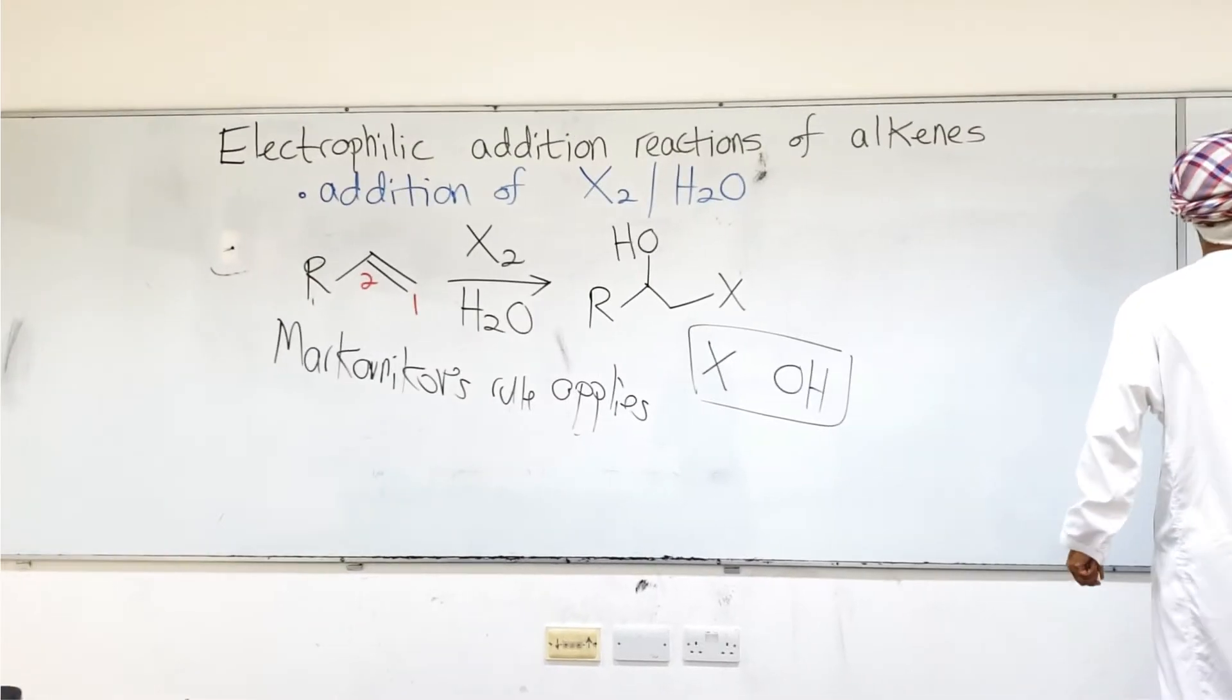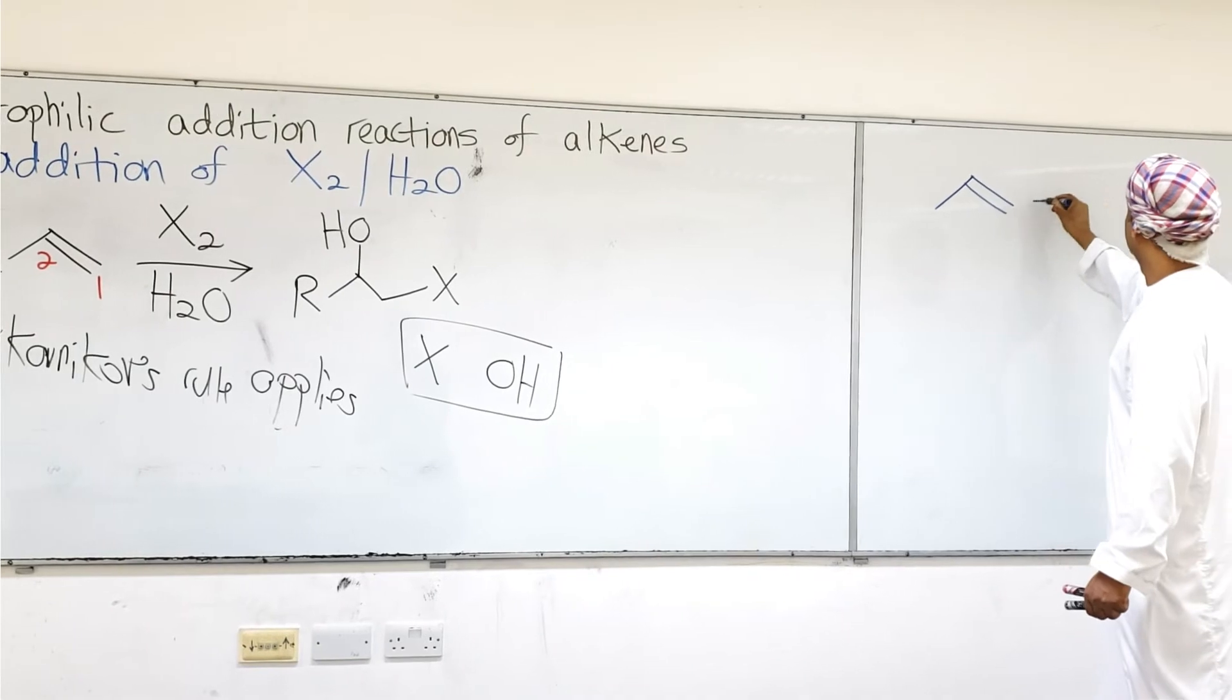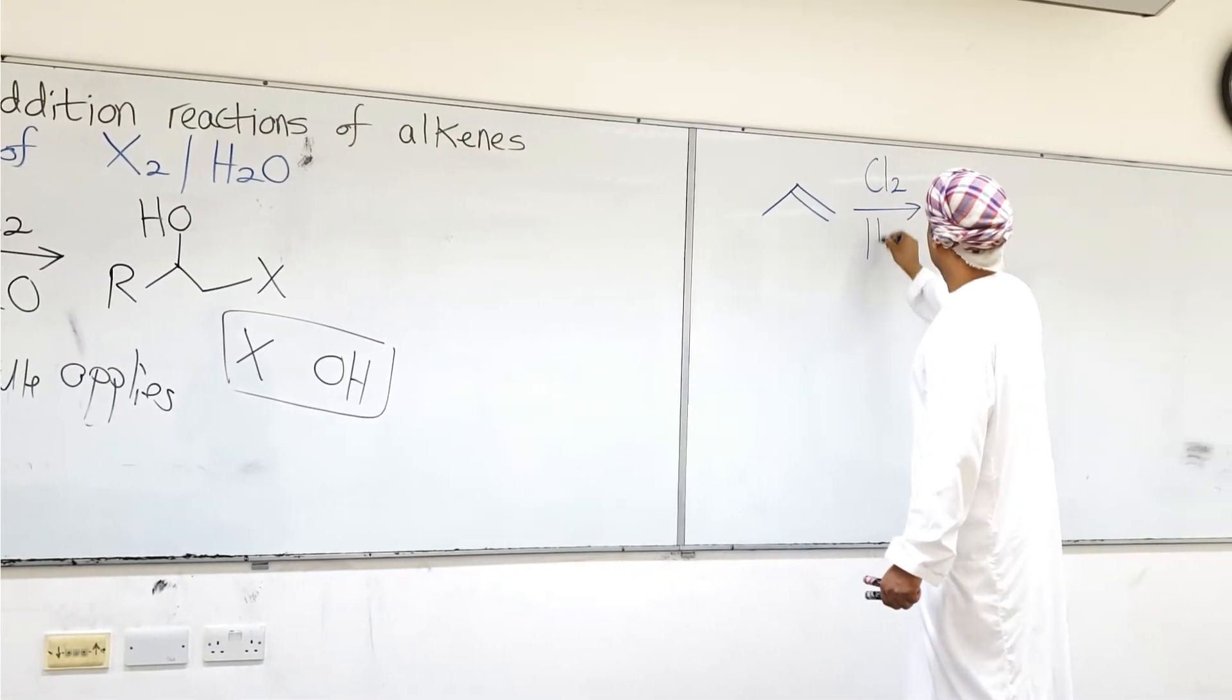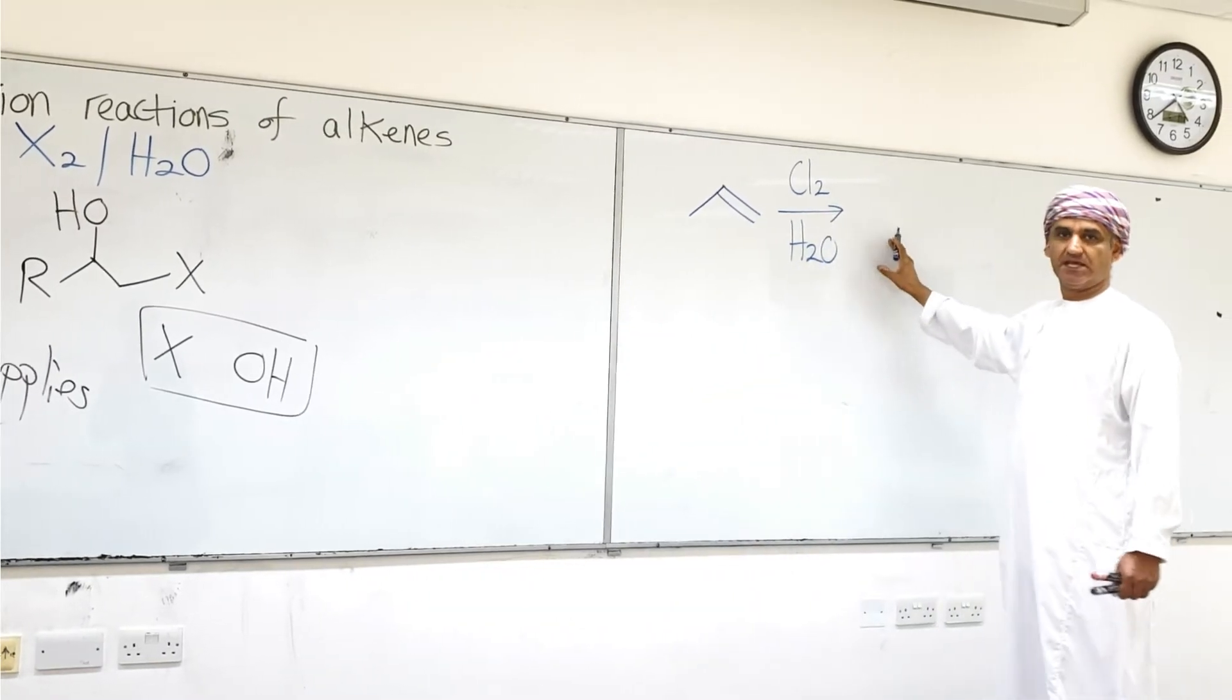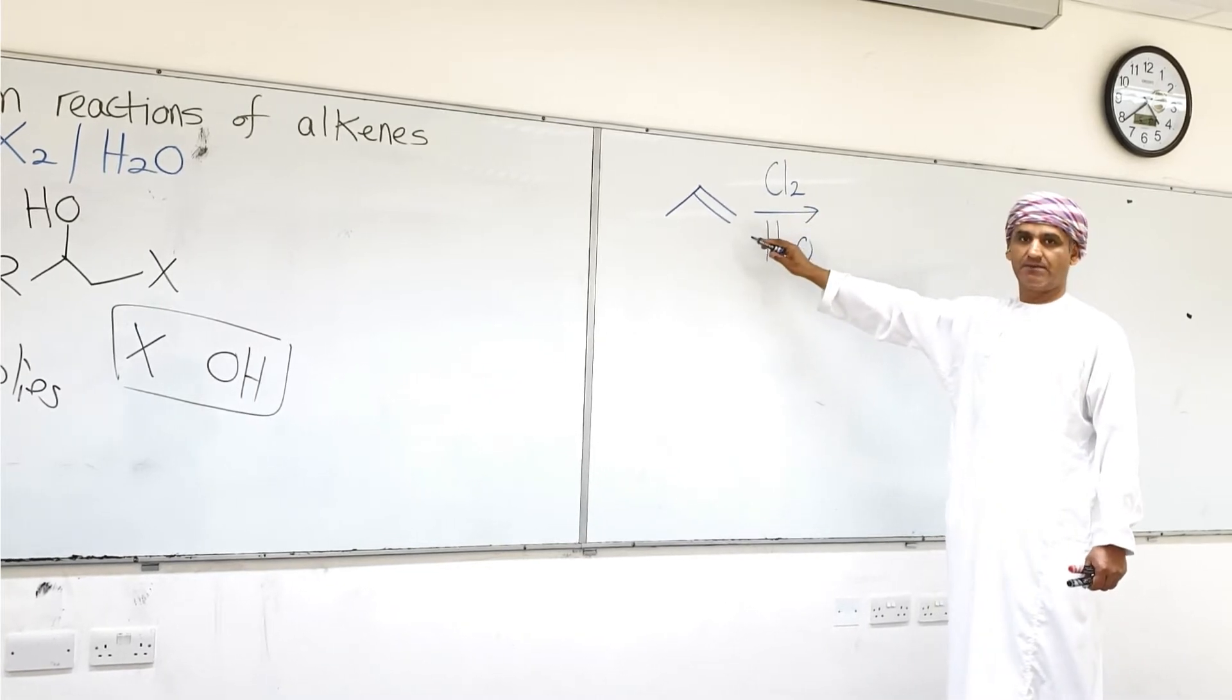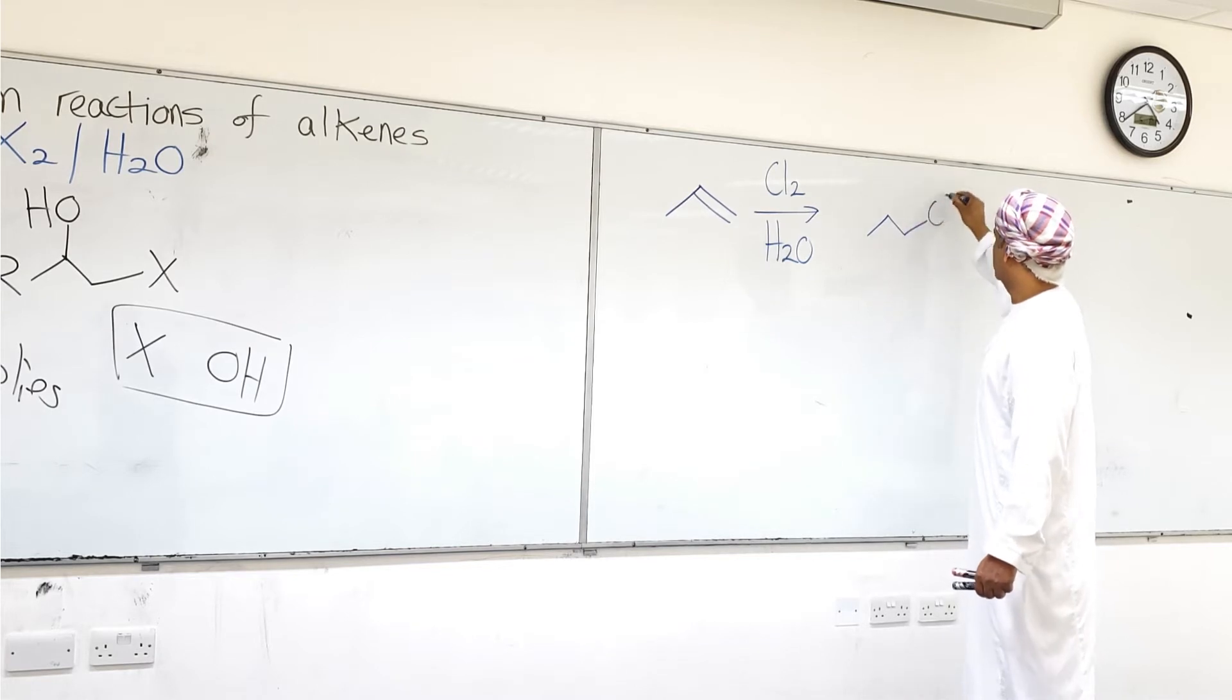If we take propene, and then we add chlorine H2O. If Markovnikov's rule applies, then Cl will point to carbon-1, and OH will point to carbon-2, and this product will then be obtained.